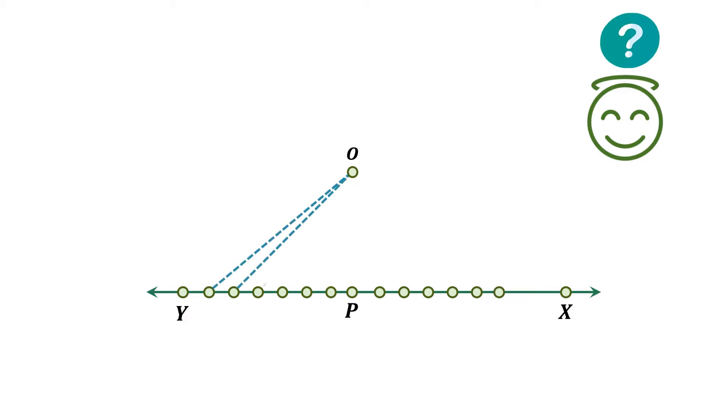In this scenario, there might be infinite line segments connecting point O and points on the line. So, which line will correctly represent distance of a point from given line?